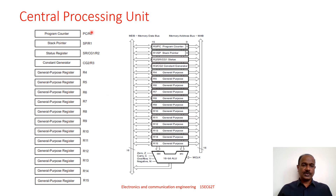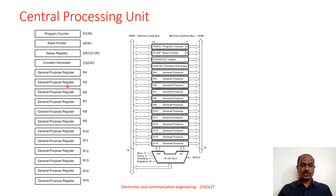The first four registers R0 to R3 have some alternative functions. R0 can be used as the program counter, R1 as the stack pointer, R2 as the status register, and R3 as the constant generator. The remaining registers from R4 to R15 are used for general purpose — data storage and data manipulation during programming. But the first four registers are usually used for these predetermined functions.